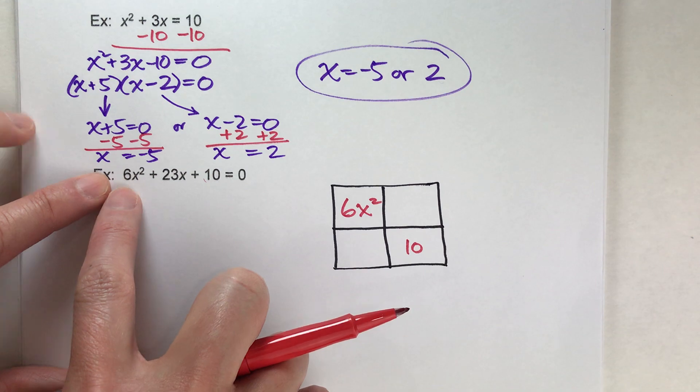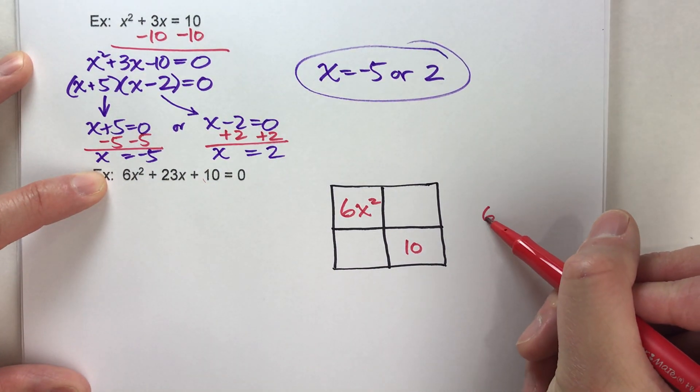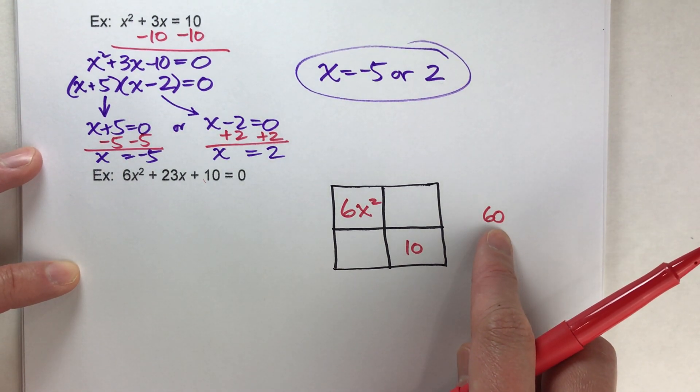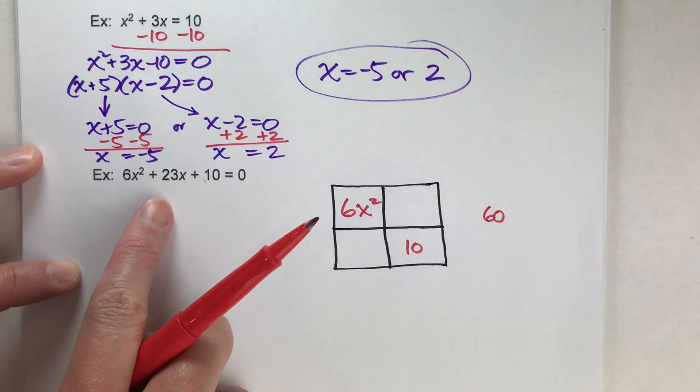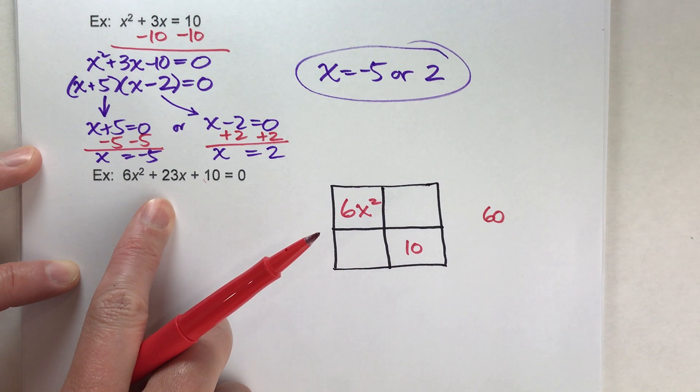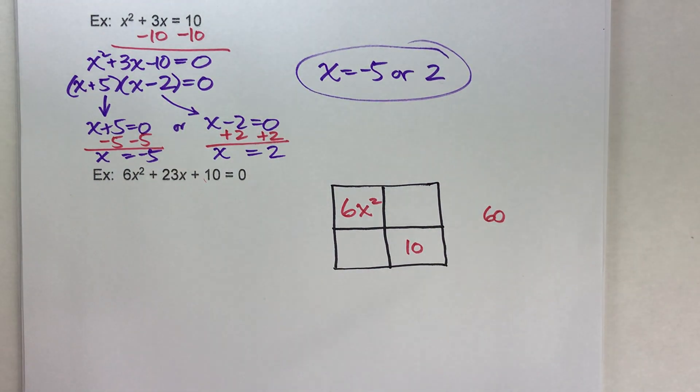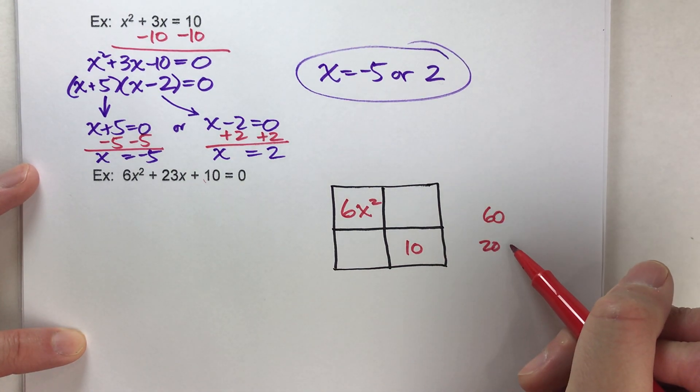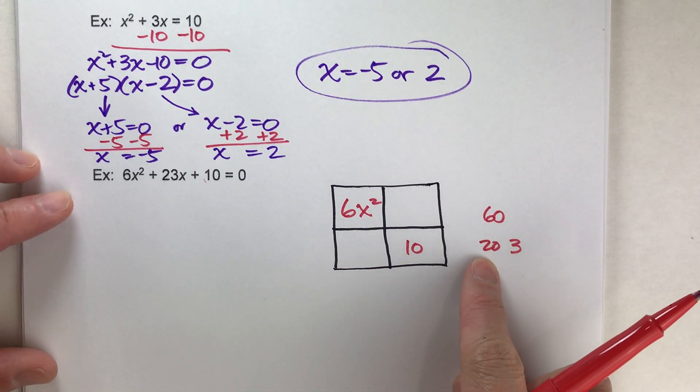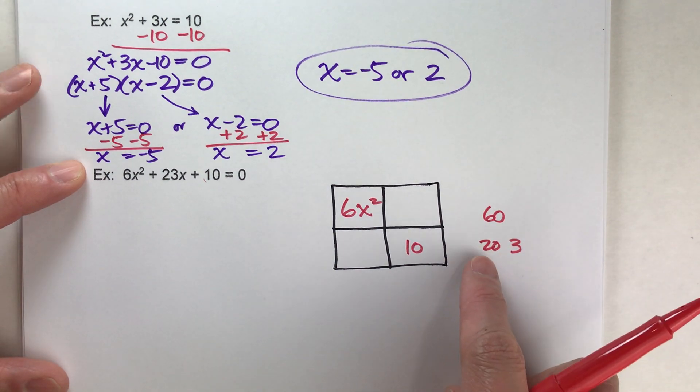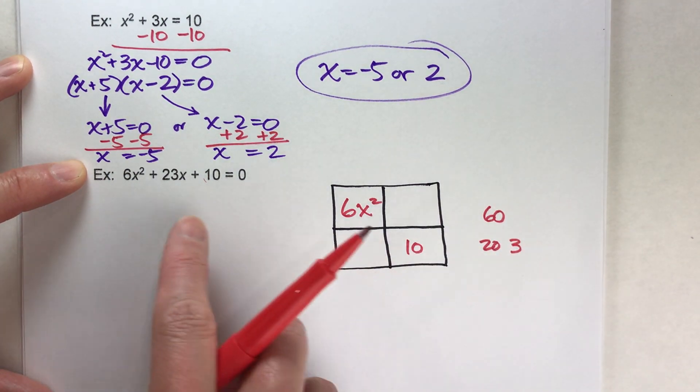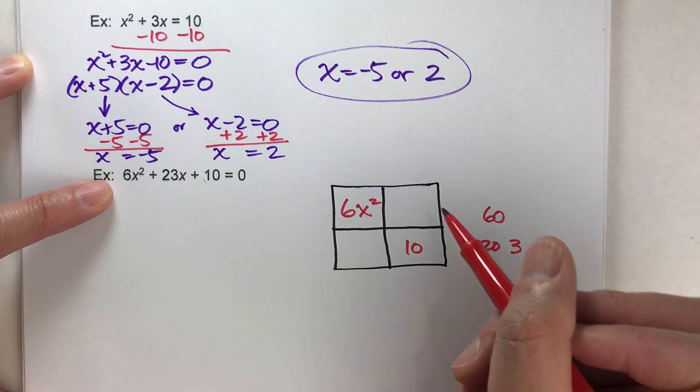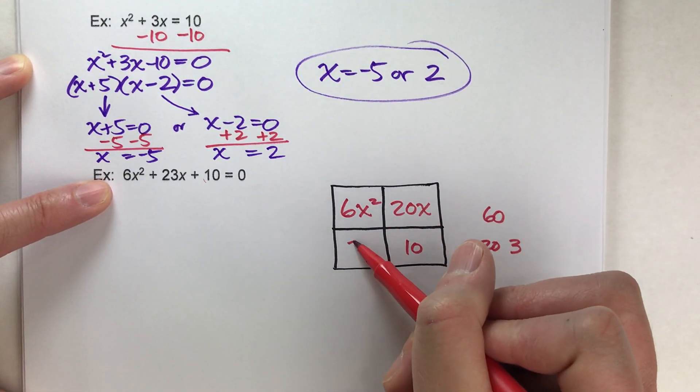I do 6 times 10 which is 60. I need two numbers that multiply to get 60 but add to get 23. This is going to be tricky but if you really think about it, 20 and 3 work because 20 times 3 is 60. 20 plus 3 is 23. So that tells us I can break my 23x into 20x and 3x.